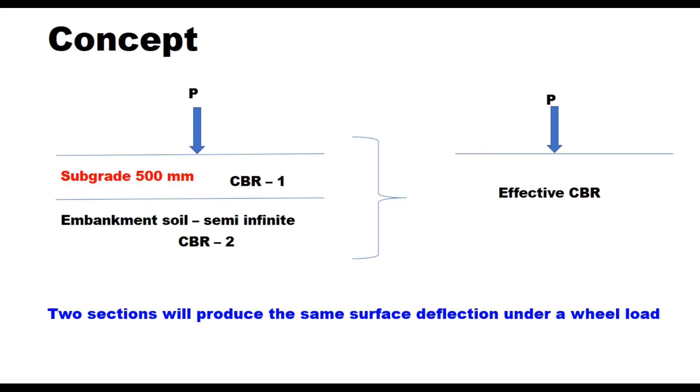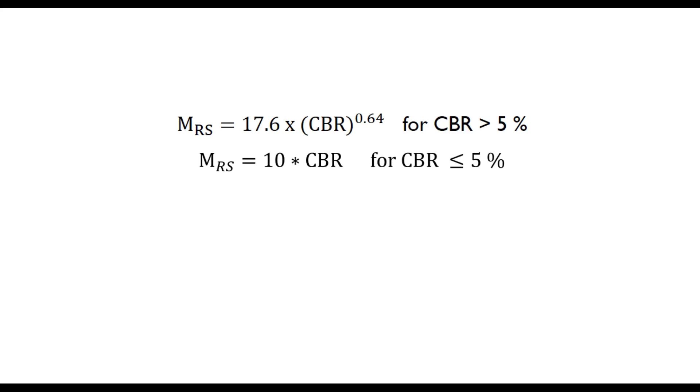The IRC 37 provides equations to convert CBR into resilient modulus. If CBR is more than 5%, then an exponential equation is used. If CBR is less than or equal to 5%, it is a linear relationship between resilient modulus of subgrade and CBR.